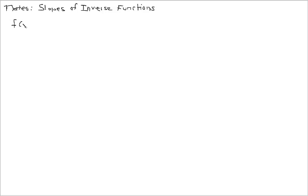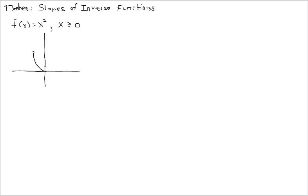So let's consider f of x equals x squared. And what we're going to do is we're going to define this parabola only for x values greater than or equal to zero. So even though I've drawn the whole parabola, we're only going to consider this portion of the graph over here.